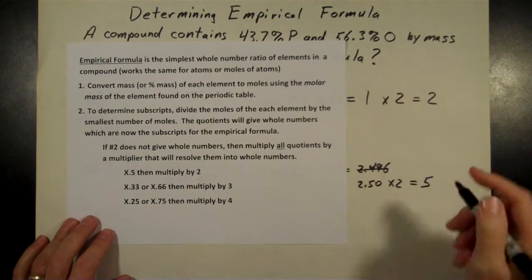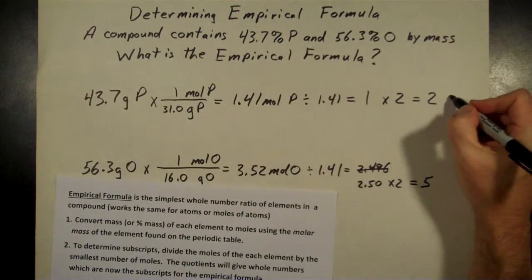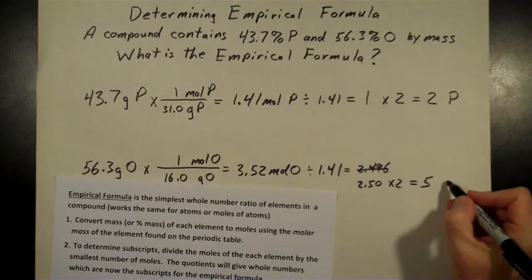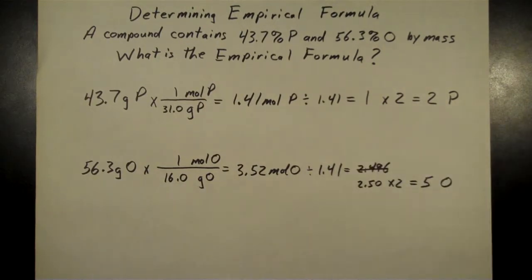So 2 times 1 gives me 2 there, and 2.5 times 2 equals 5. I get 2 phosphorus atoms and 5 oxygen atoms. That gives me my empirical formula then, it's going to be P2O5.